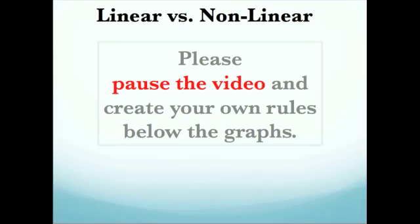Hopefully you decided on your own rules. What you should have come up with is something along the lines of a linear equation is going to have an x with an exponent of 1. Or in the case of the third graph there, the y equals negative 3, you get an exponent of 0, but you get a constant, a horizontal line. It's special.